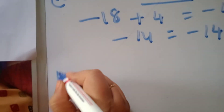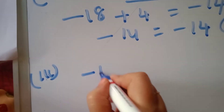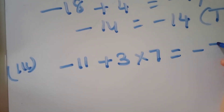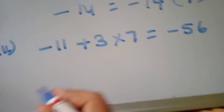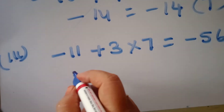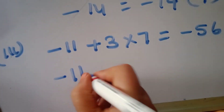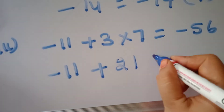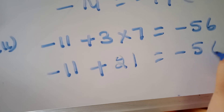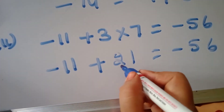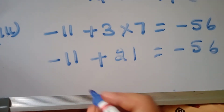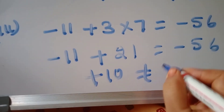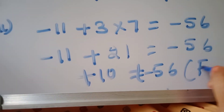Third one: minus 11 plus 3 into 7 equal to 56. First, 3 sevens are 21. So minus 11 plus 21 equals plus 10. Plus 10 is not equal to minus 56, so this is a false statement.